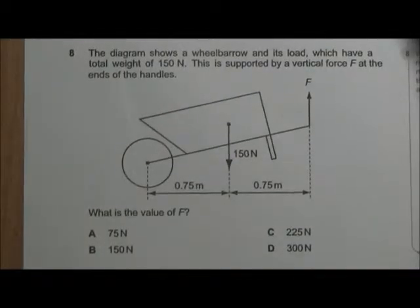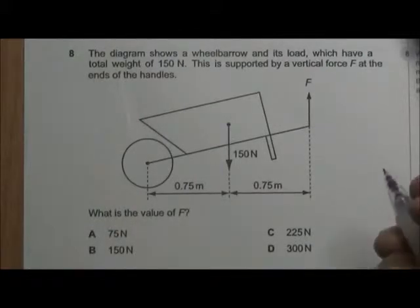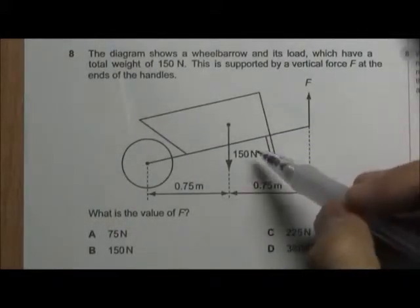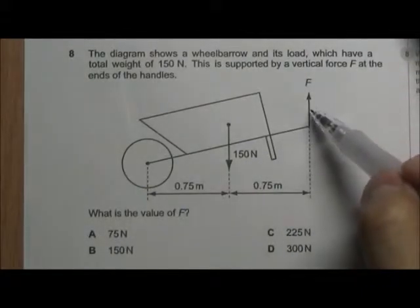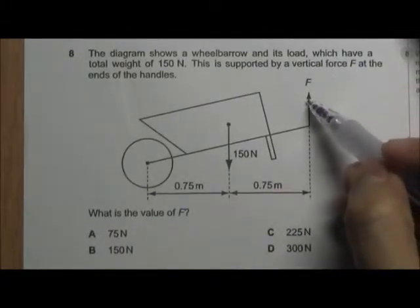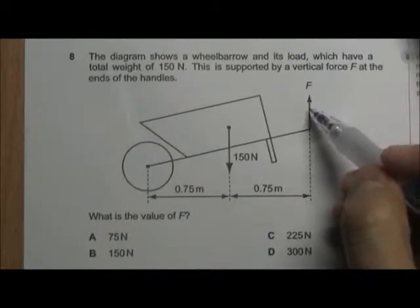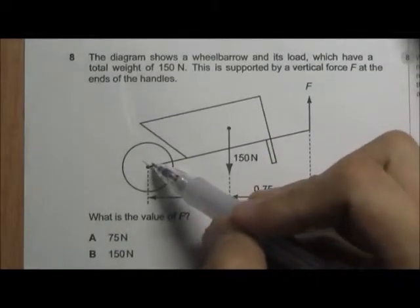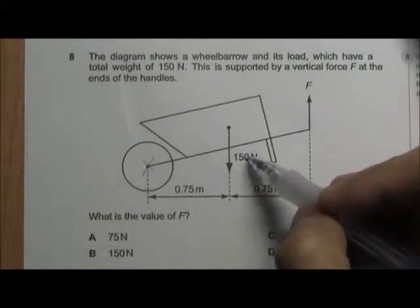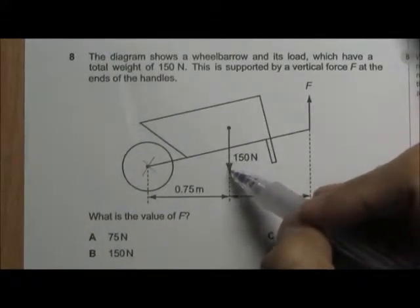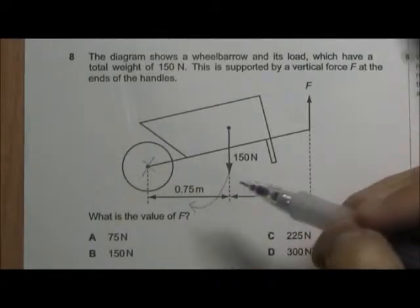In this question, we have a wheelbarrow that is acted by two forces. One is the weight of 150 N. The other one is the applied force F. The whole thing is pivoted at the wheel here and the weight of 150 N is going to cause an